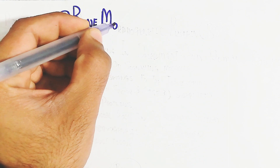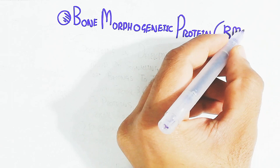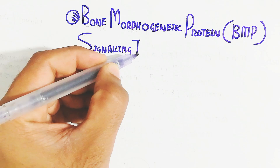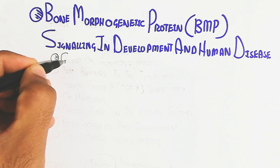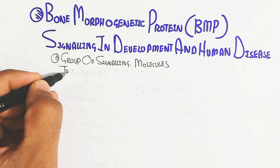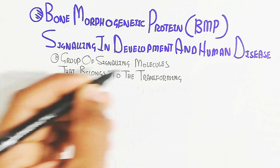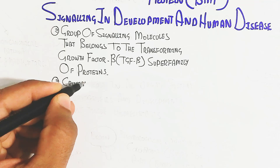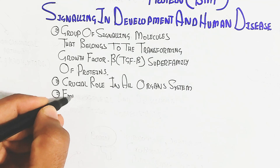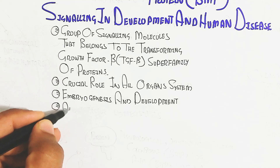In this video we will learn about the bone morphogenetic protein BMP signaling pathway in development and human disease. The group of signaling molecules that belong to the transforming growth factor beta — the TGF-beta superfamily of proteins — play a crucial role in all organ systems for development, growth, morphogenesis, embryogenesis.